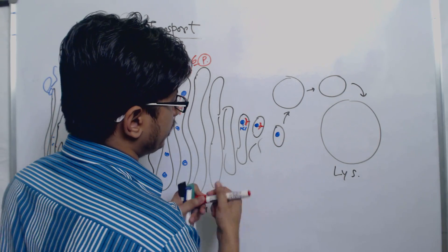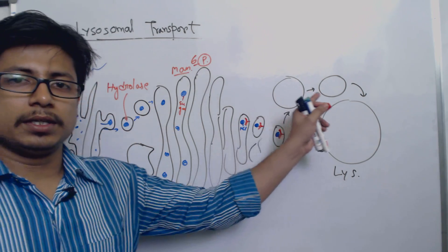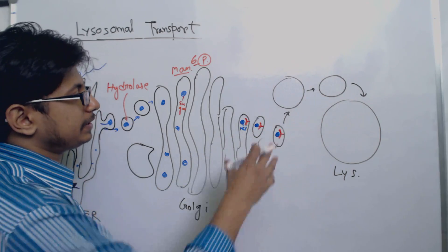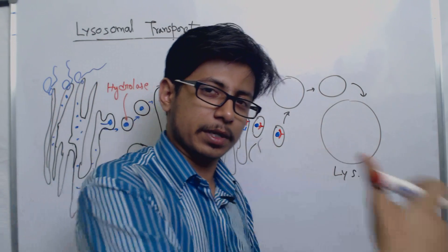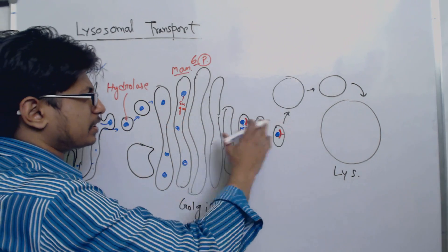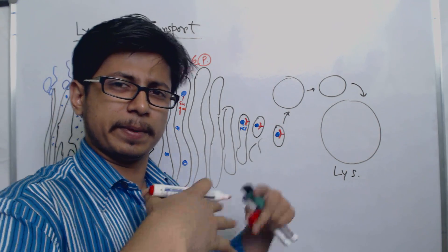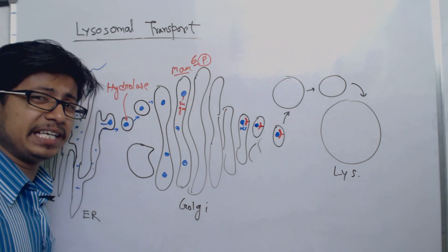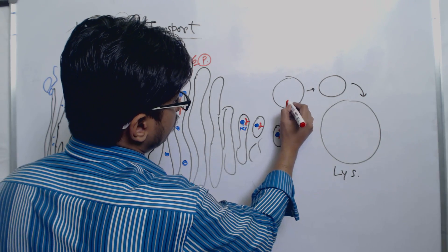It will be transported towards lysosome. And even before becoming a lysosome, this vesicle itself has the capability to convert itself into a lysosome. The only difference is lysosome contains many of these enzymes: hydrolases, many peptidases, lipase and many of these enzymes altogether. And also, they have a very acidic pH.